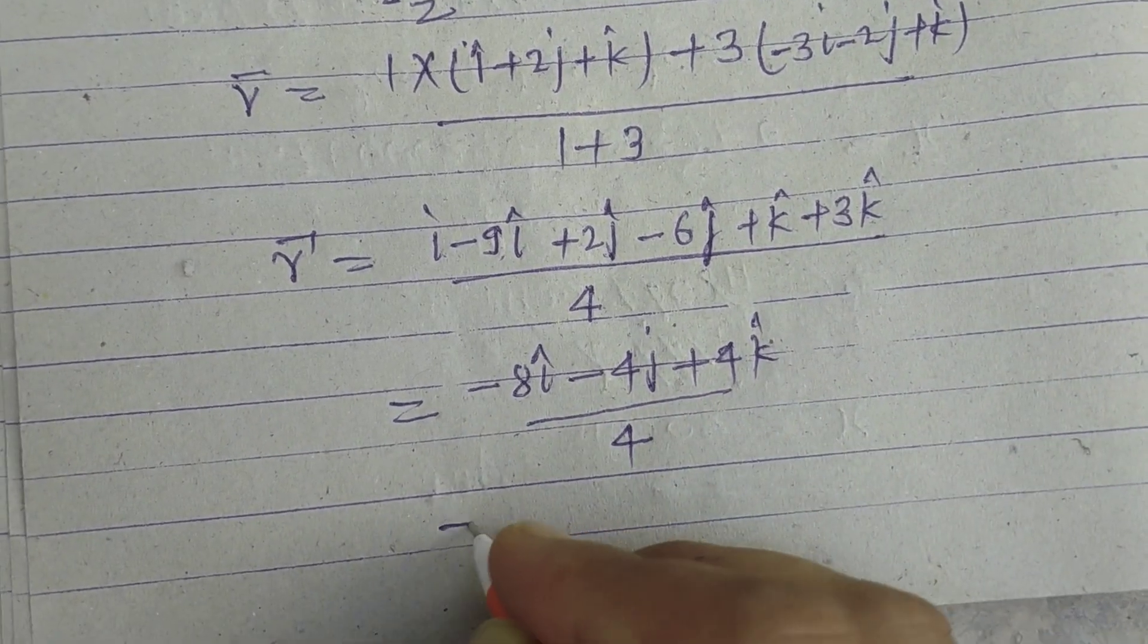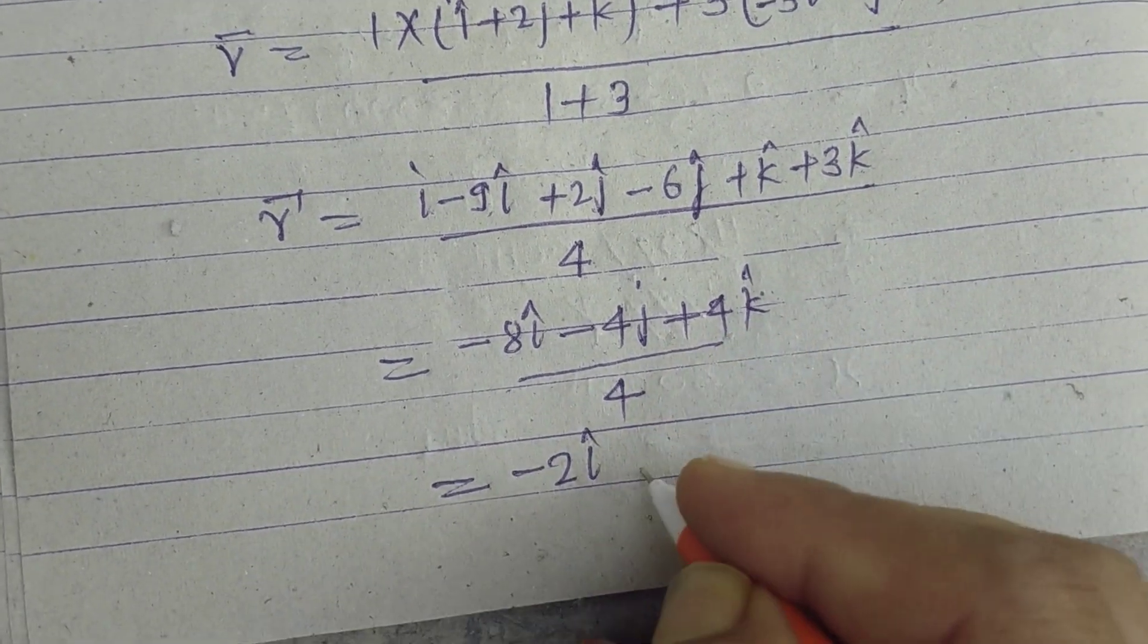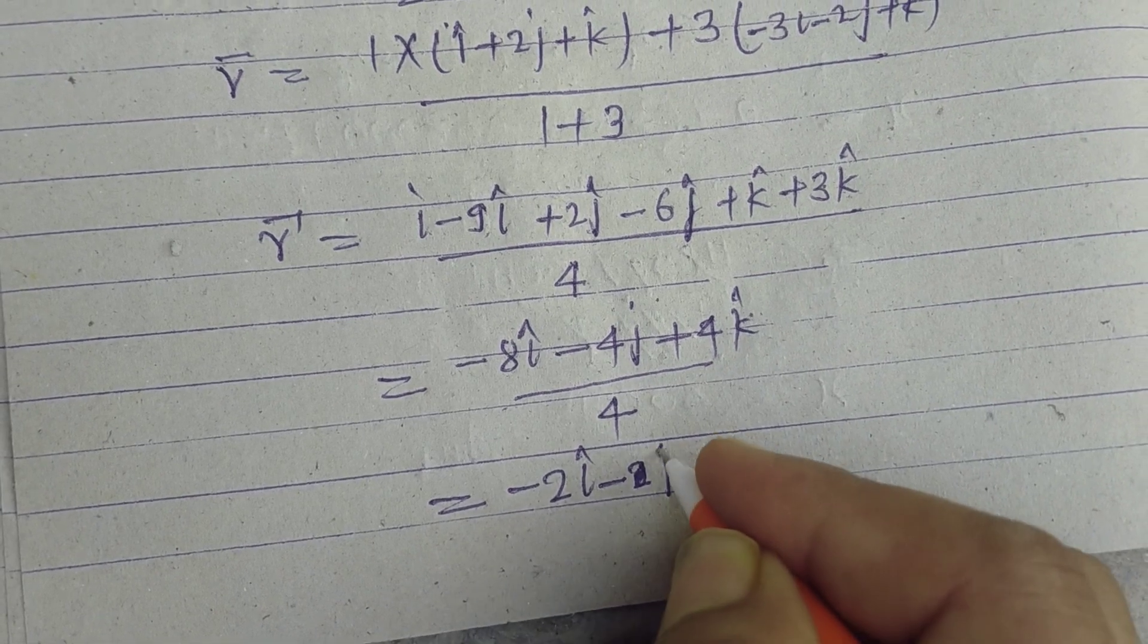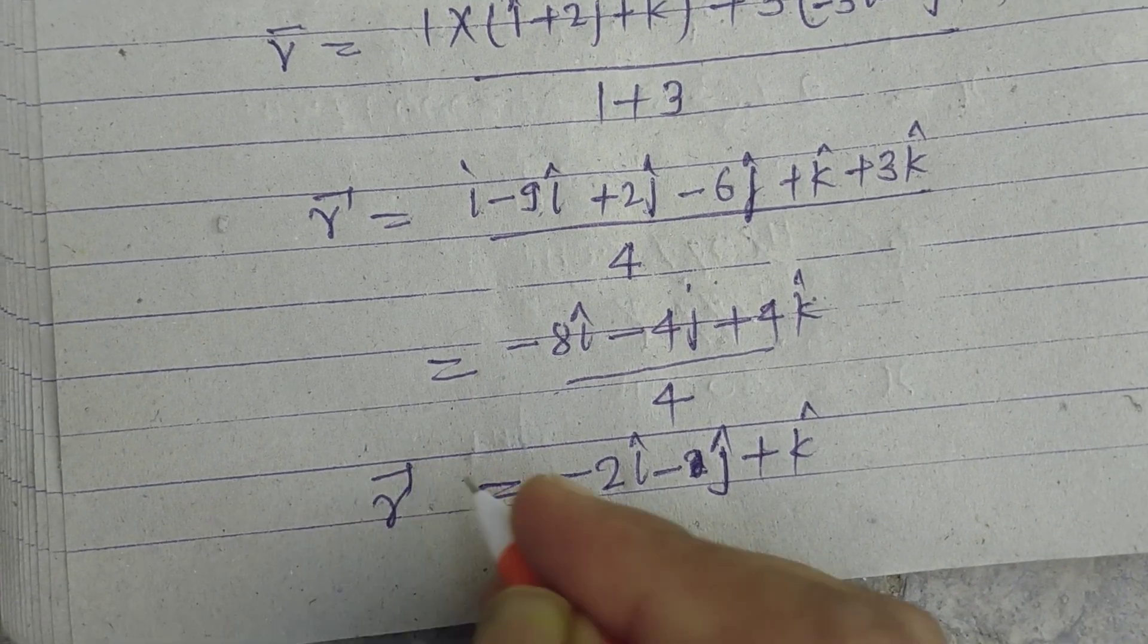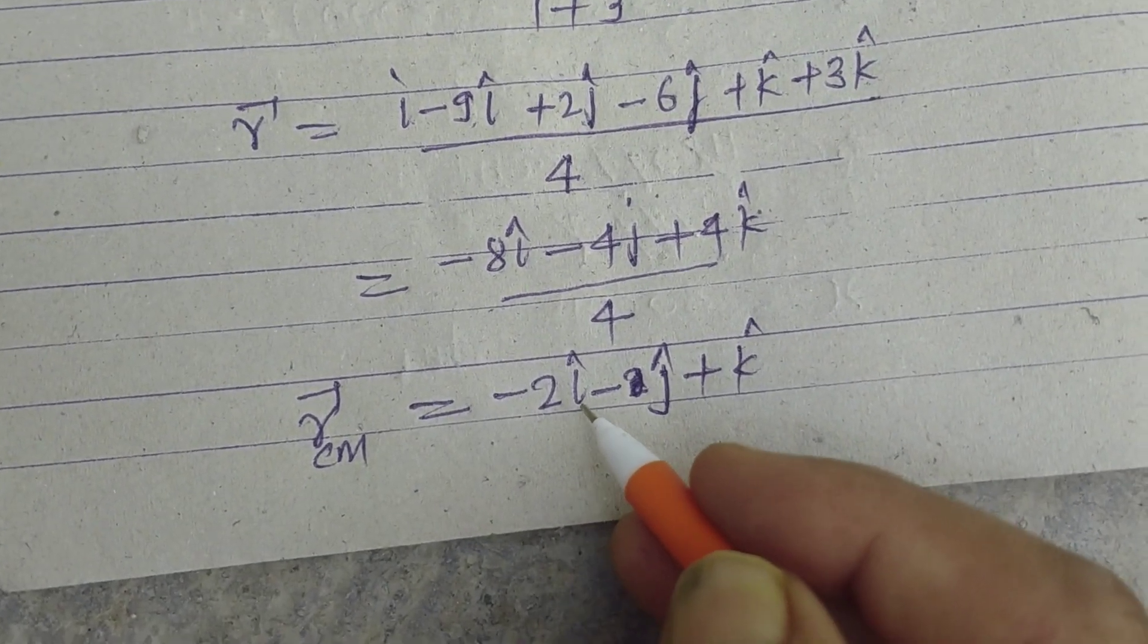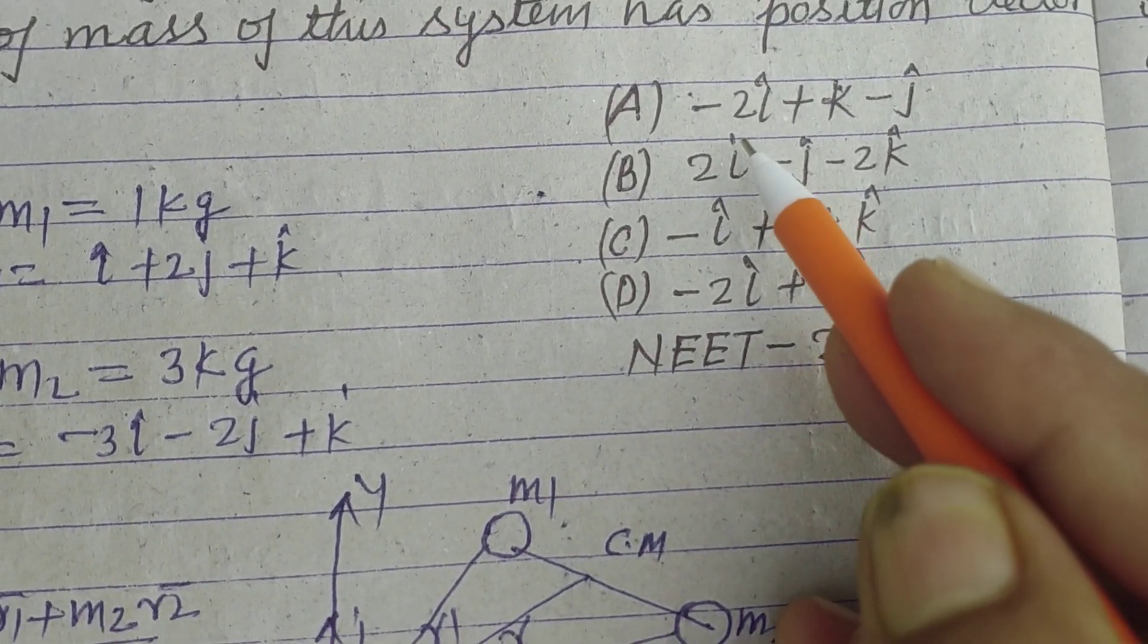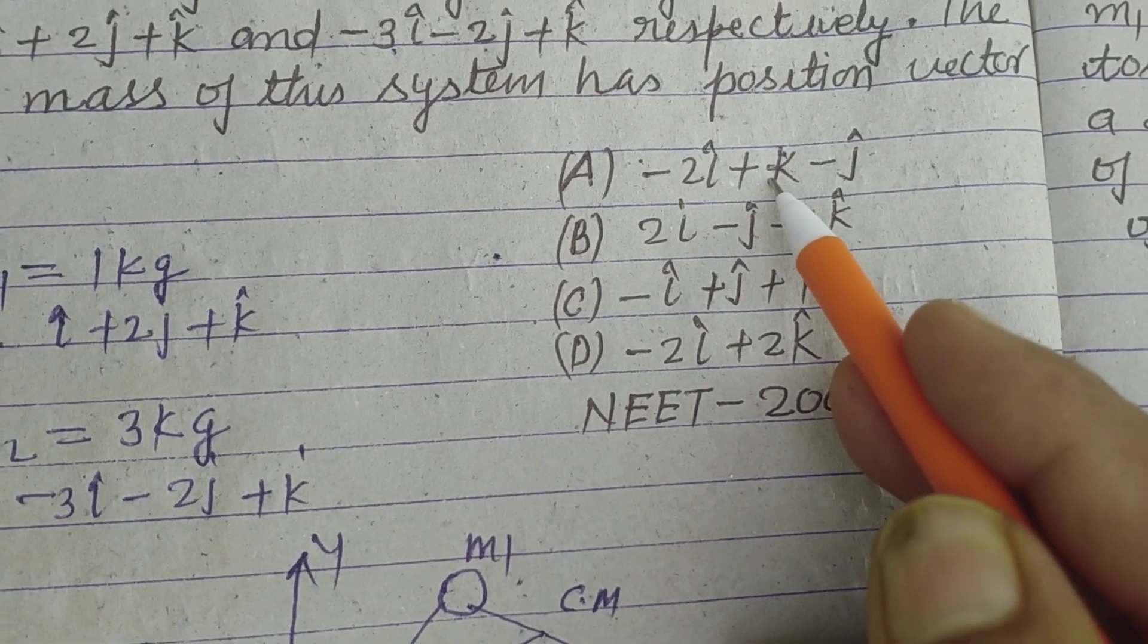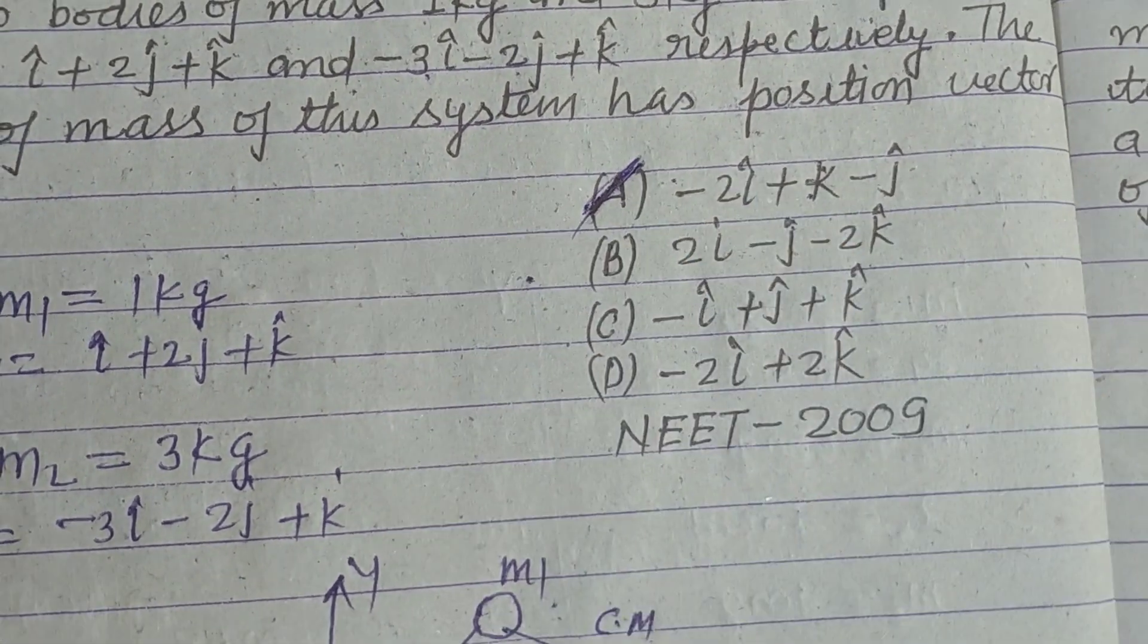Over 4. On dividing by 4, we get -2i - j + k. So the position vector of center of mass is -2i - j + k. Therefore, A is the correct answer to this question.